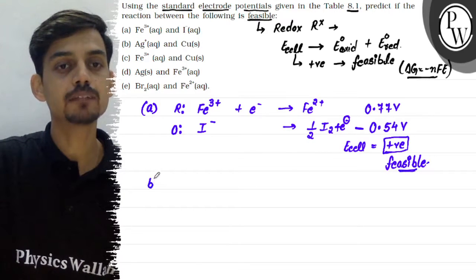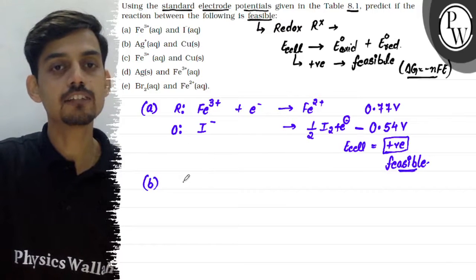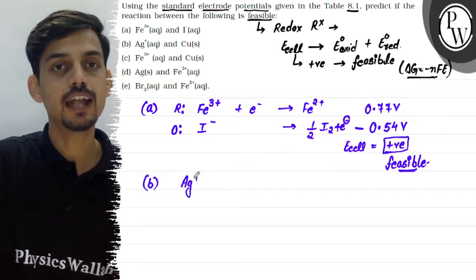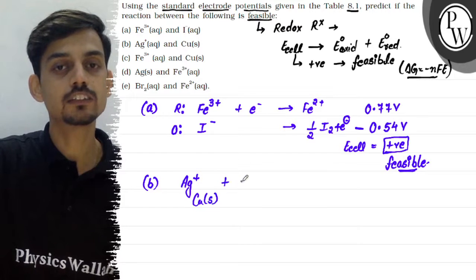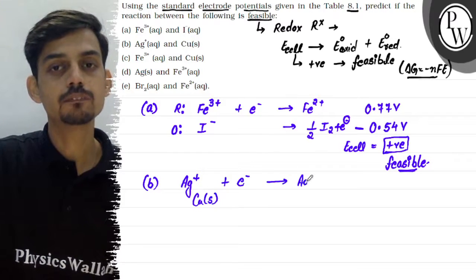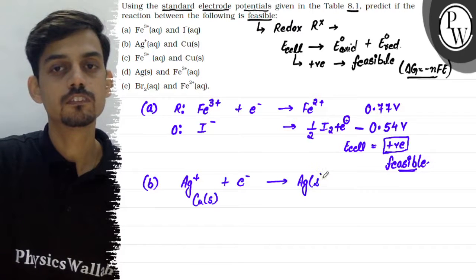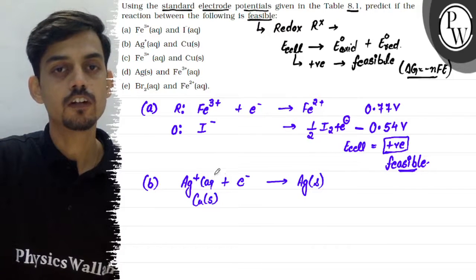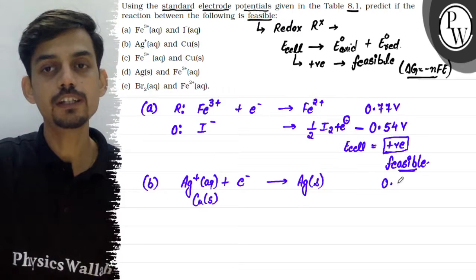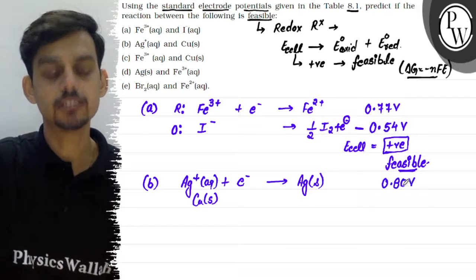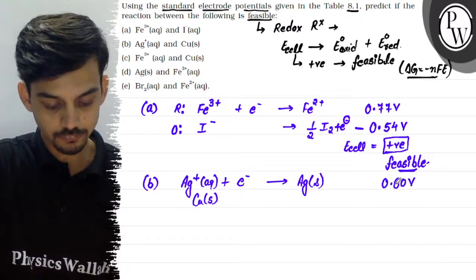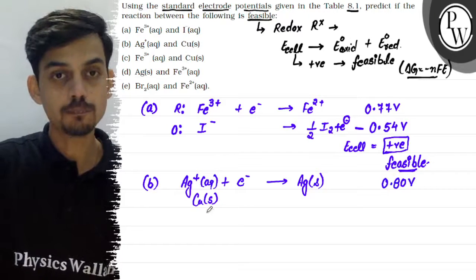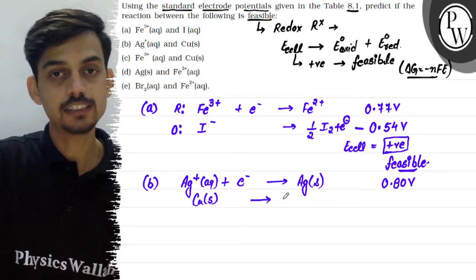Now let's check the second pair. Second pair given hai that is of Ag+ and copper solid. If we have Ag+ ka reduction hoga into Ag. So its reduction potential is 0.80 volt. The reduction potential here is 0.80 volt.